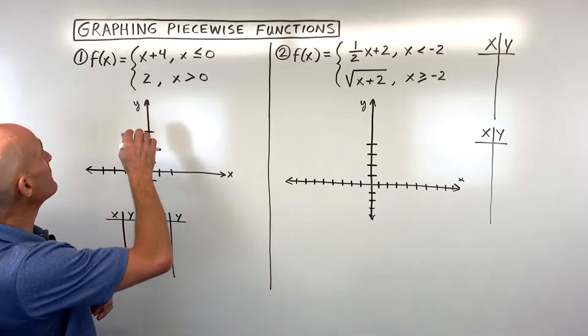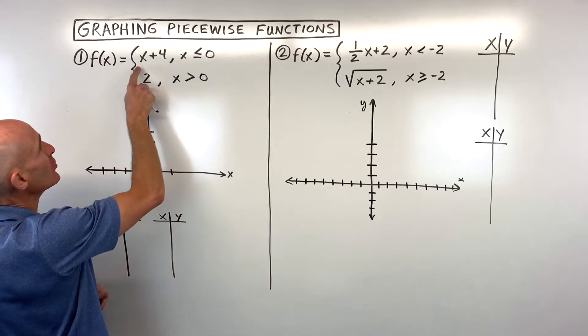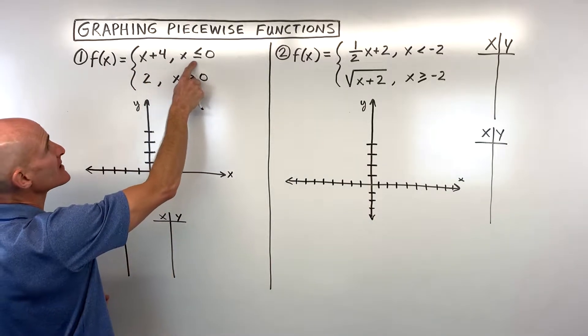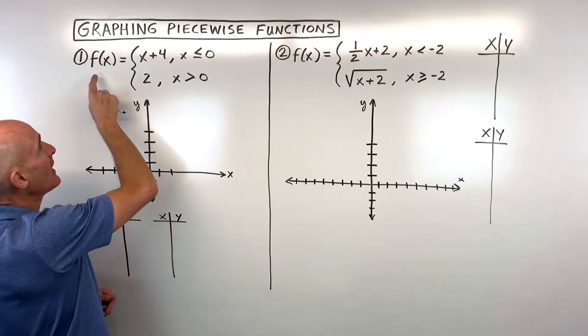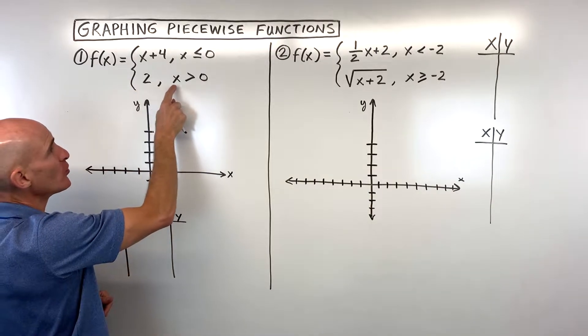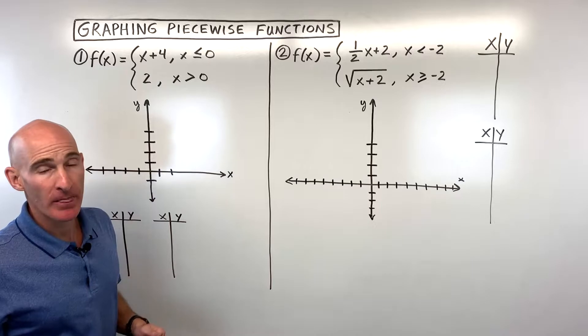The first example: we have f of x equals x plus 4 when x is less than or equal to 0, and f of x equals 2 when x is greater than 0.